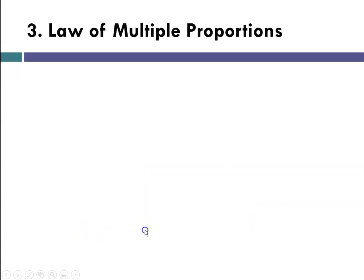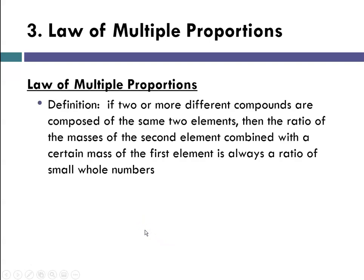The third law was the law of multiple proportions. It states that for two or more compounds, if they're composed of the same two elements, there will always be some ratio of those elements and it'll always be some small whole number ratio.